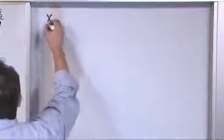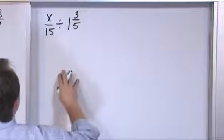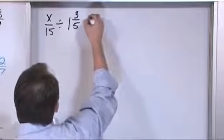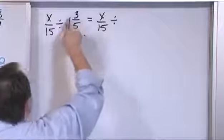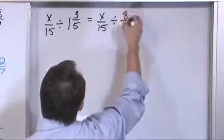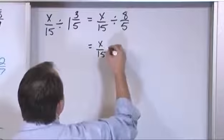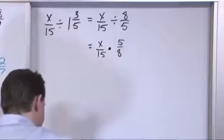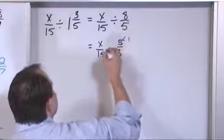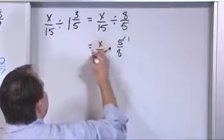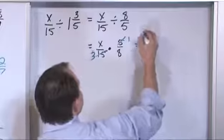x over 5 divided by 1 and 3 fifths. So let's convert this to improper: we'll have x over 5 divided by — 1 times 5 is 5, plus 3 is 8 over 5. Rewriting this: x over 5 turns this into multiplication, flip this over: 5 eighths. On the top and the bottom, 5 divided by 5 is 1, and 15 — wait, the 5 divided by 5 is 1, and 5 divided by 5 gives us 1 in place. So x times 1 is just x, and the remaining denominator times 8 gives us 24. So we'll have x over 24.